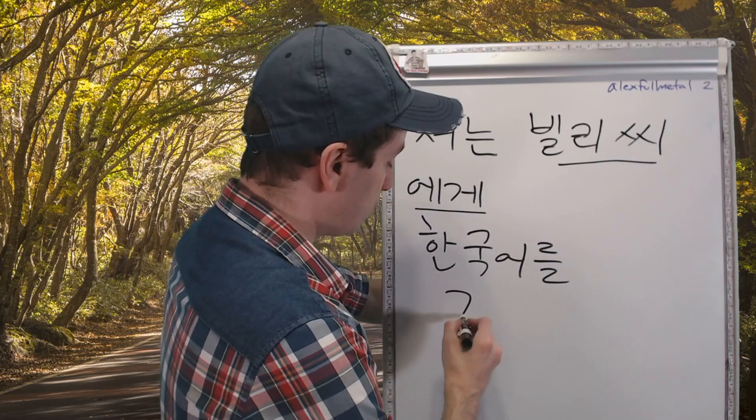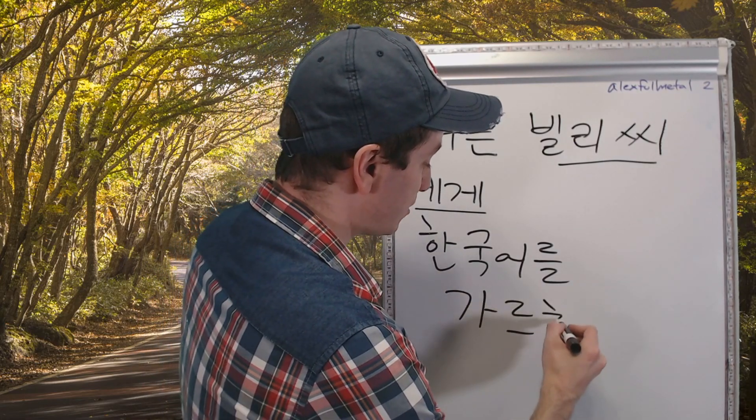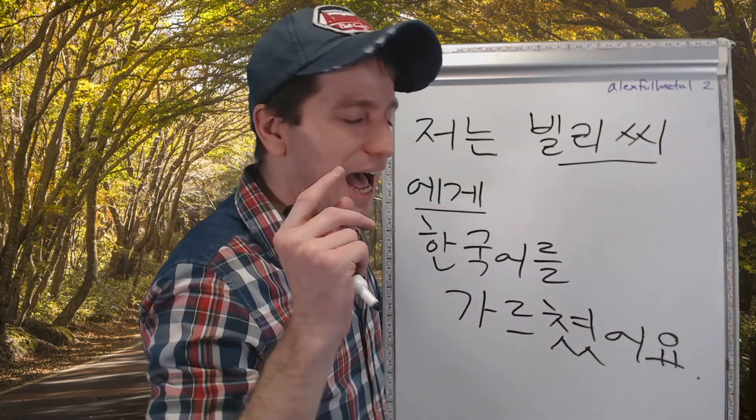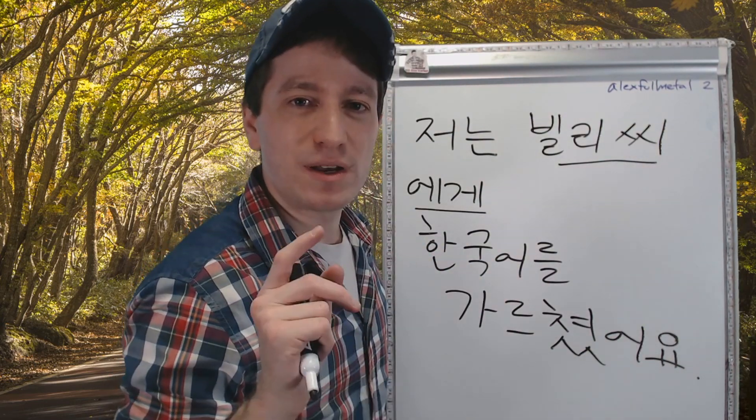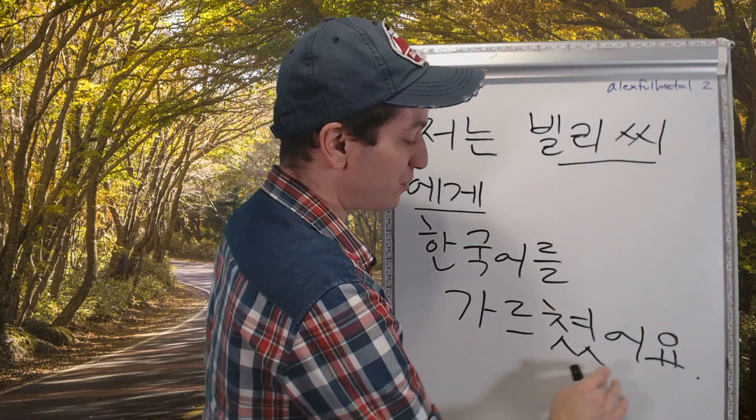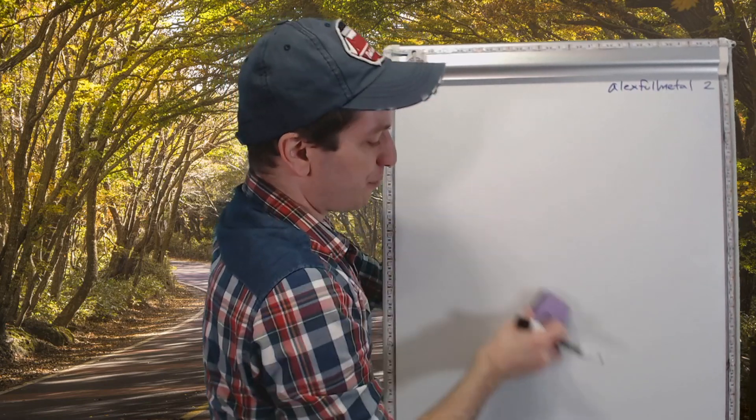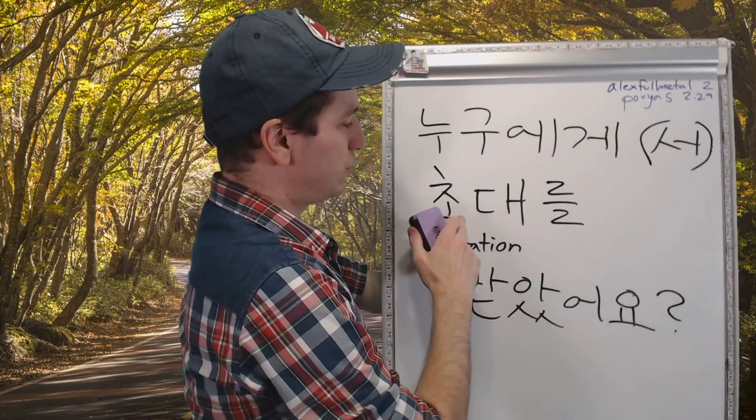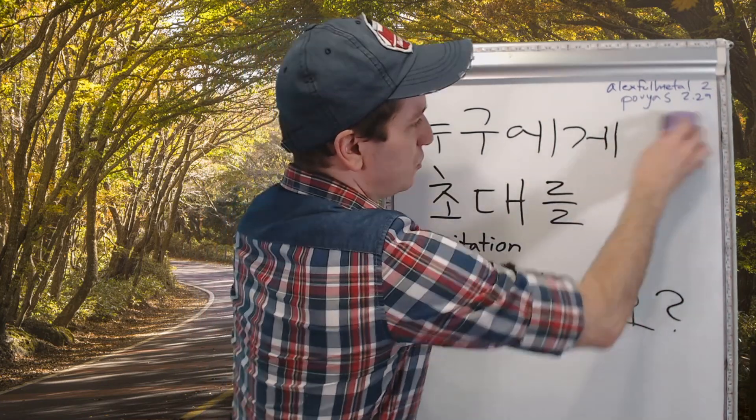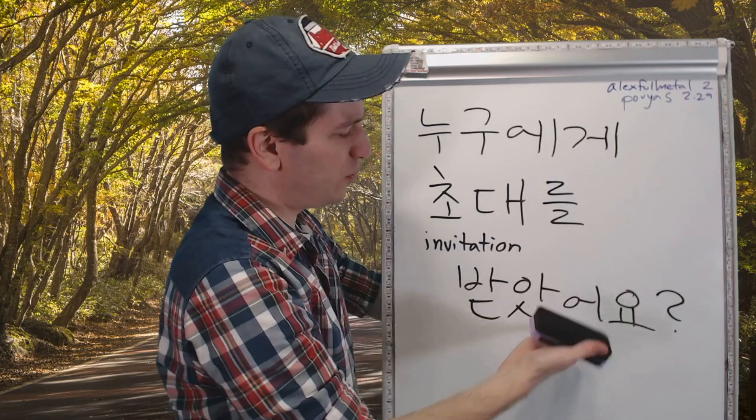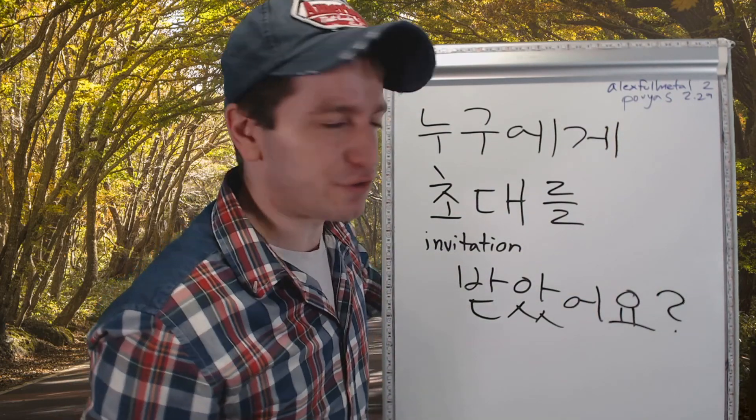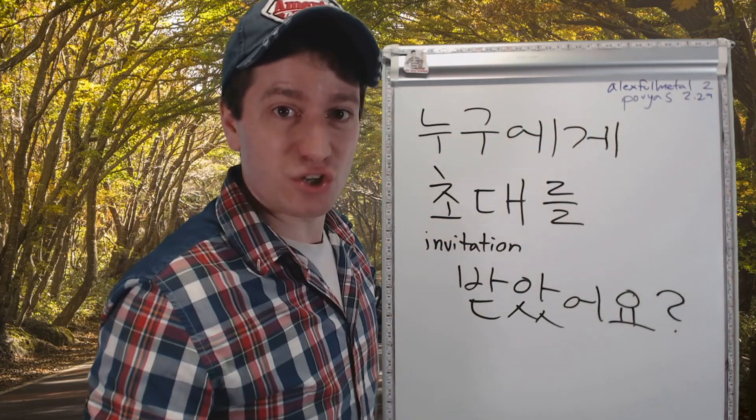Instead of to learn, what if we were to change it to 가르치다, to teach? So now we have 한국어를 가르쳤어요. I taught Korean to Billy. 저는 빌리 씨에게 한국어를 가르쳤어요. You can just do 에게 for both to and from. 누구에게서 초대를 받았어요, from who or 누구에게. So from who did you receive an invitation? Who did you receive an invitation from? 누구에게 초대를 받았어요.